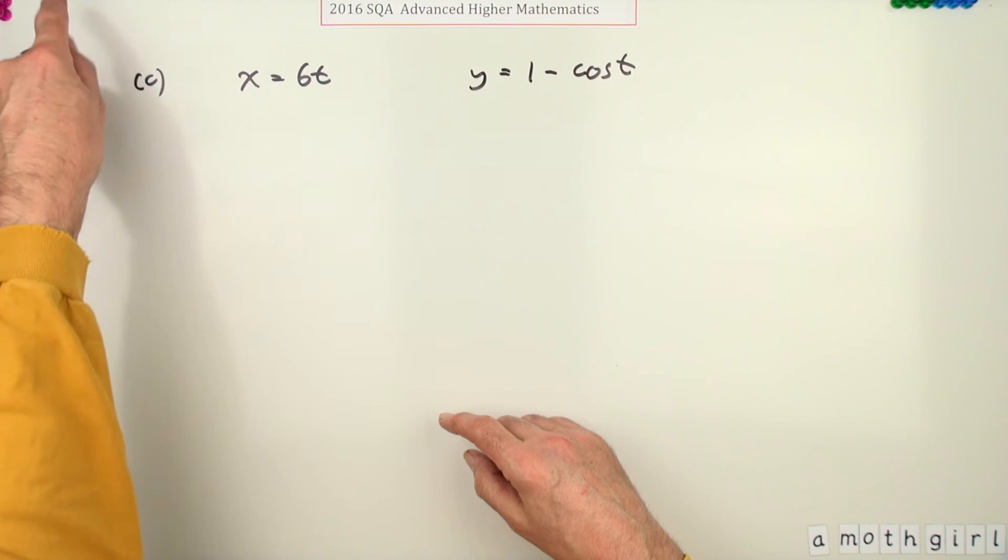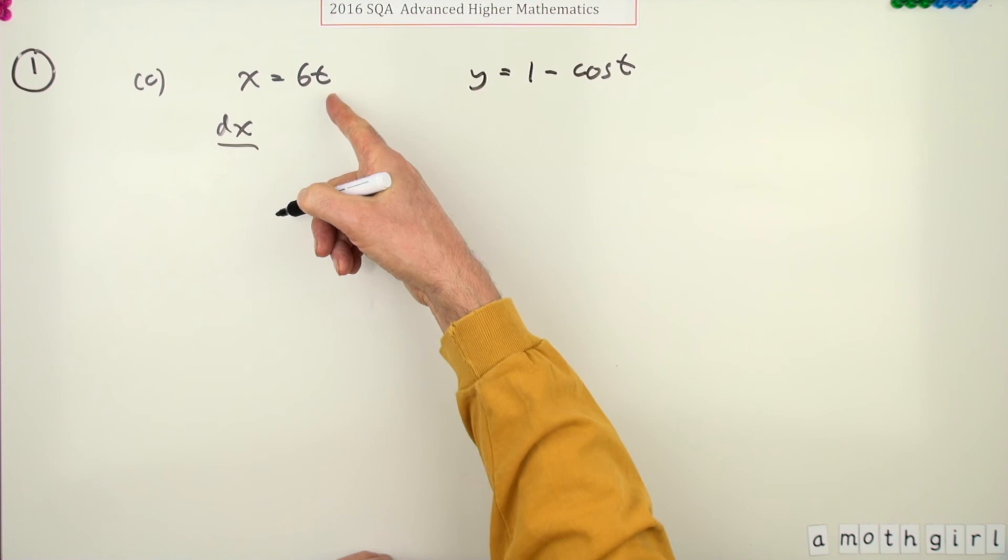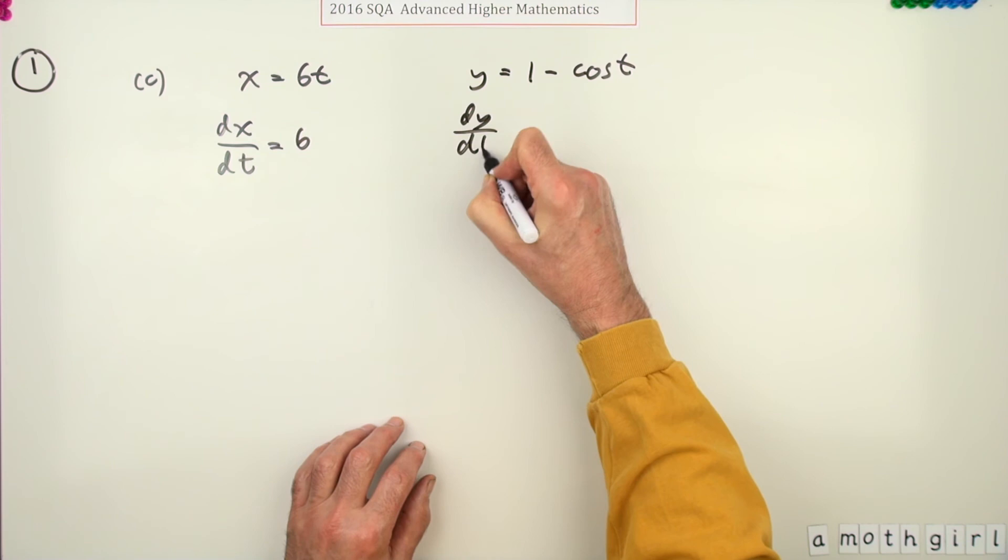Well the first thing would be you can only differentiate it with respect to what it's got here, so you'd have to do dx by dt which is just 6. And dy by dt which is going to be, the derivative would be negative but I've got negative already so that's going to be sine t.